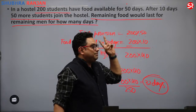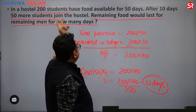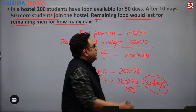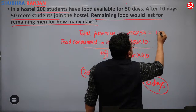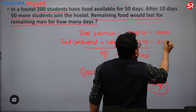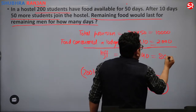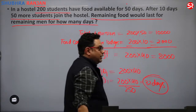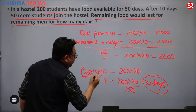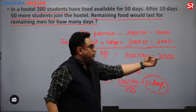To recap: total provision was 200 × 50 equals 10,000. Consumed in 10 days by 200 men was 200 × 10 equals 2000. Food left equals 10,000 minus 2000 equals 8000 units. Now 200 men plus 50 more equals 250 people have to consume this, so 8000 / 250 gives 32 days.